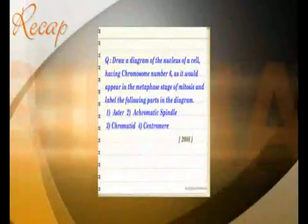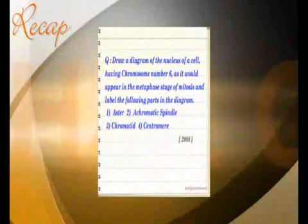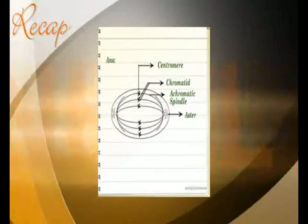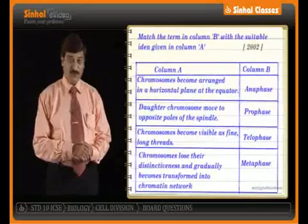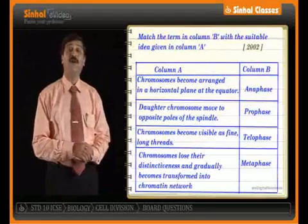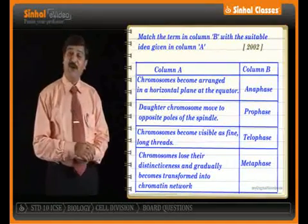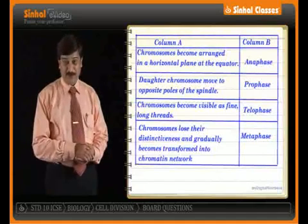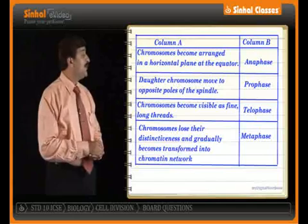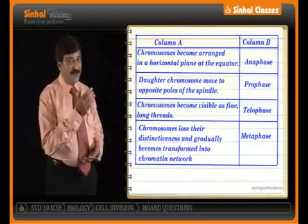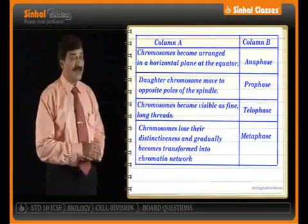See this question that was asked in the year 2002. The question reads: match the term in column B with a suitable idea given in column A. Read properly what is given in column A and column B. See to it that you read each and every sentence properly to give the right answer. The first one is: chromosomes become arranged in a horizontal plane at the equator. The options are anaphase, prophase, telophase, and metaphase.